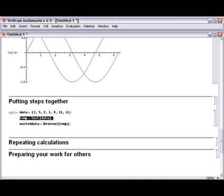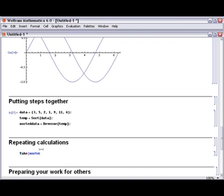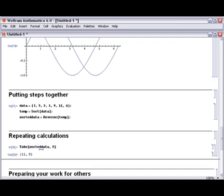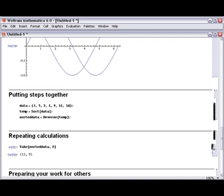The notebook interface makes it very easy to repeat calculations. So let's take, for example, as a final step to this calculation, taking the first two elements. Now let's suppose we wanted to try these sequence of steps, but with different values. I can simply go back and edit within the document a new value and repeat the calculations by selecting all of the necessary cells and re-evaluating them.